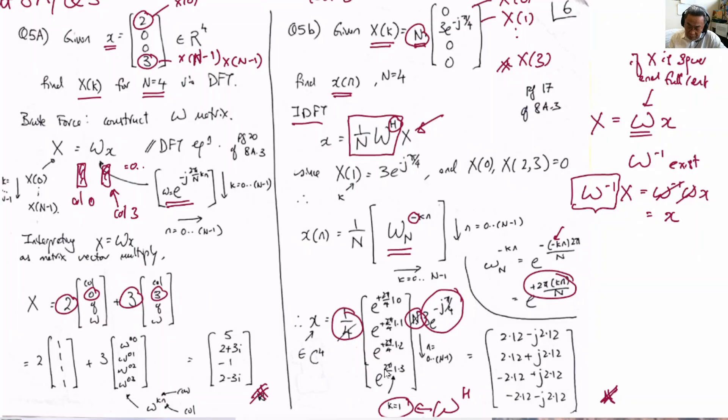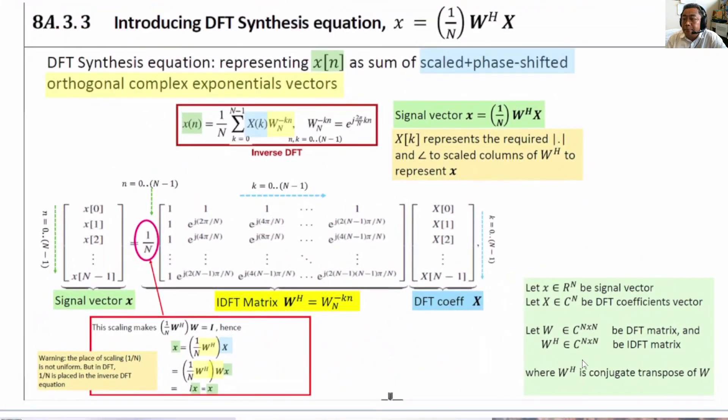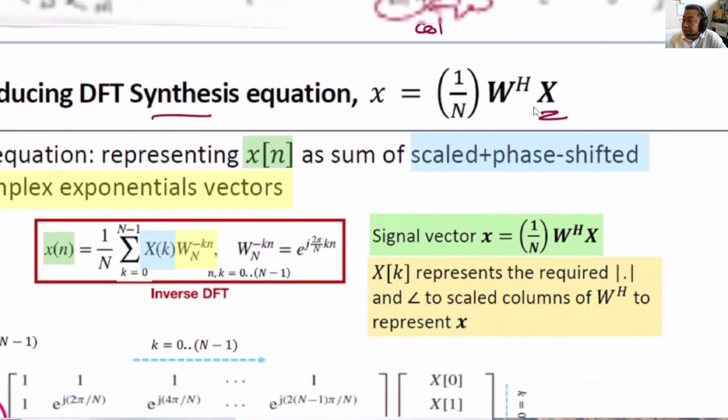Oh, before that, maybe we will revise the notations. In this notation, we are having the inverse DFT. Basically, we call this the synthesis equation because we have the DFT coefficient X and we want to generate the time sequence small x.